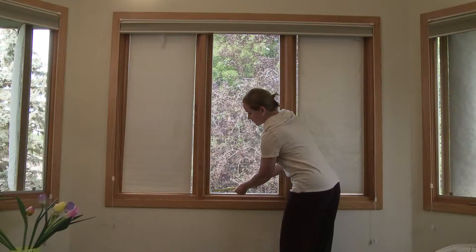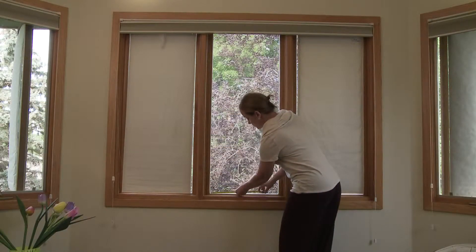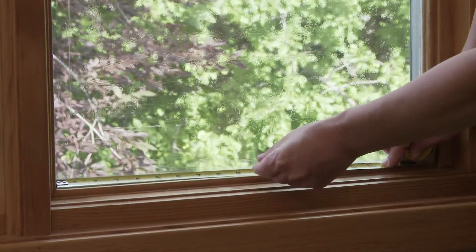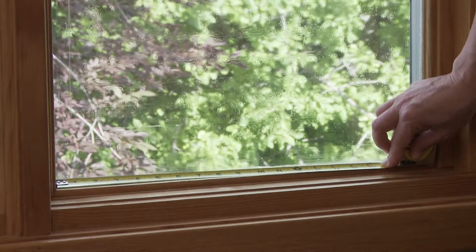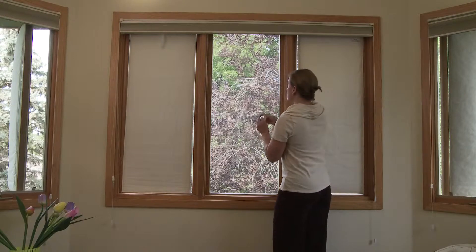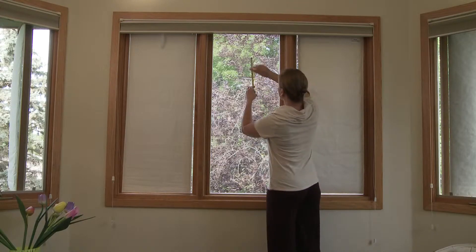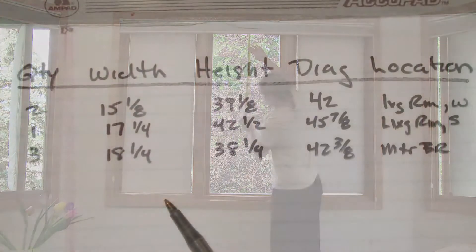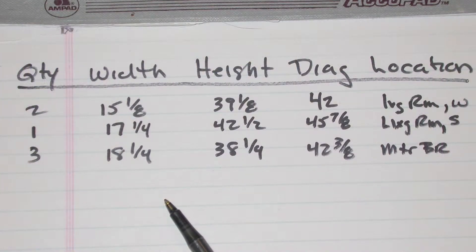Do not include the window frame. Measure the window glass width, height, and finally the diagonal accurately to one-eighth of an inch. Record your measurements in your table, along with the number of Eco Window Blankets needed for each size, and note the window's locations, such as master bedroom.